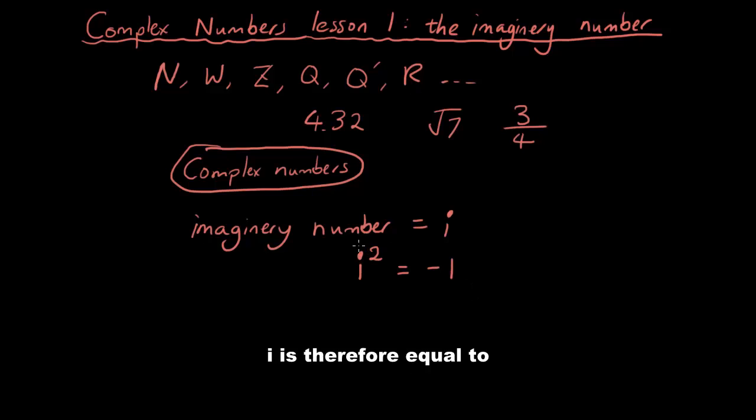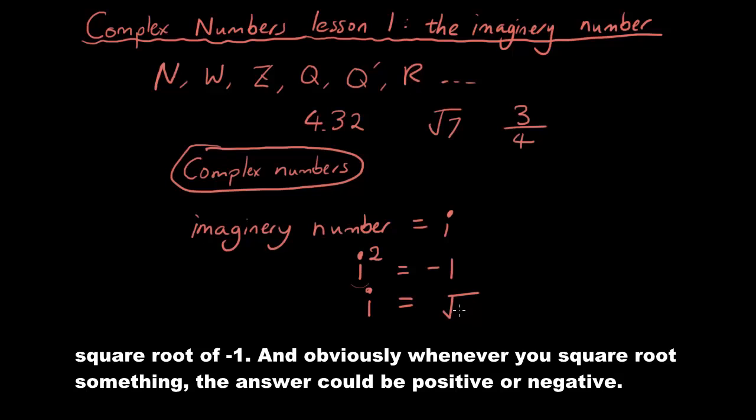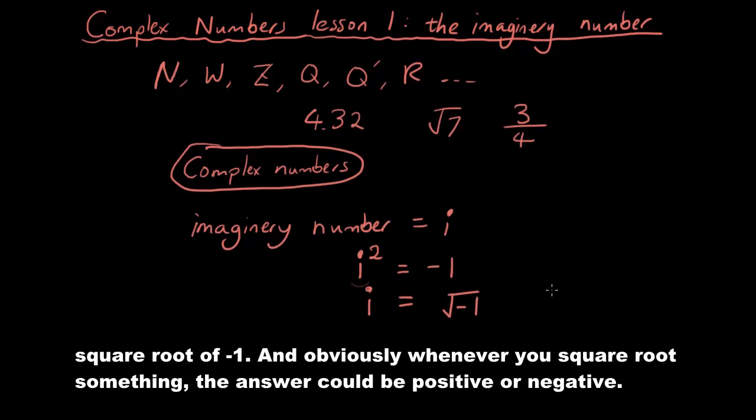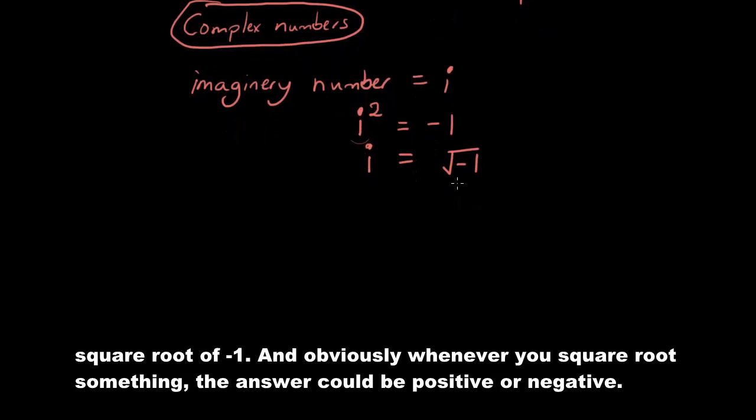i squared is equal to negative 1. That's i is therefore equal to square root of negative 1. And obviously, whenever you square root something, the answer could be positive or negative.